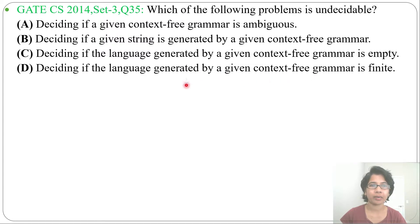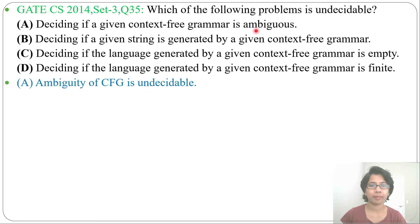Let's go through each option and check which is undecidable. The first option is about ambiguity. We know ambiguity of a context-free grammar is undecidable. So option A is undecidable — there is no algorithm for checking ambiguity of a context-free grammar; you have to try randomly.